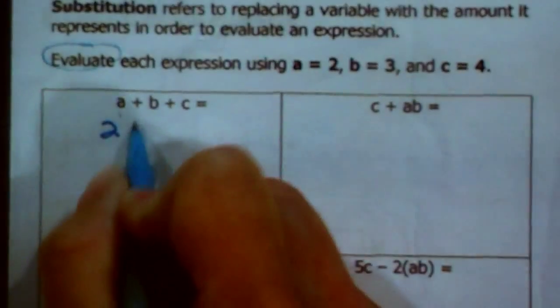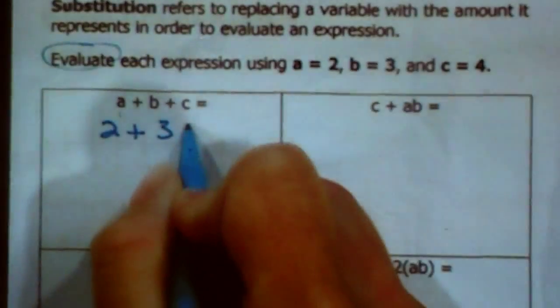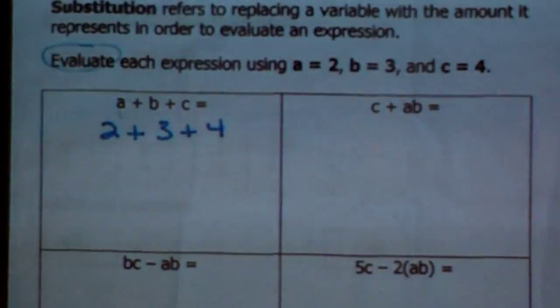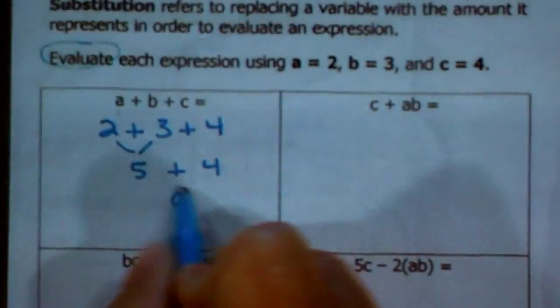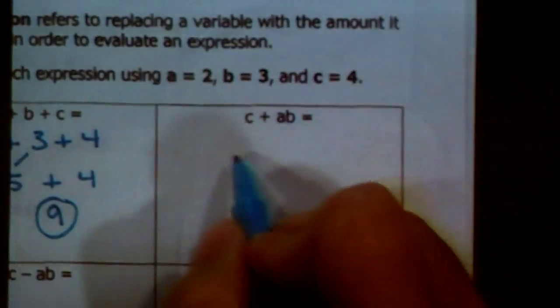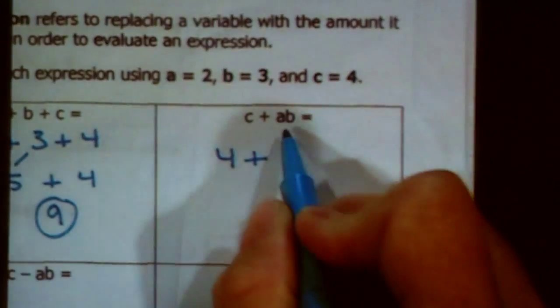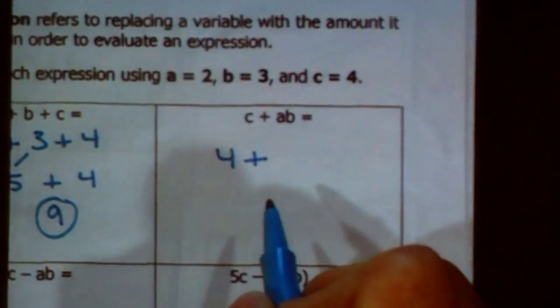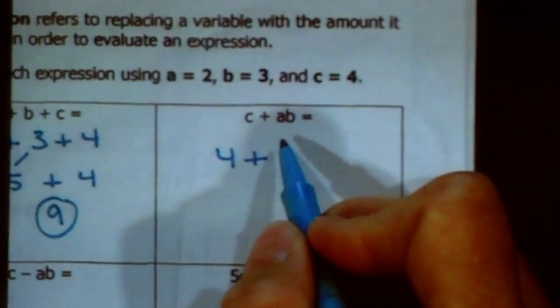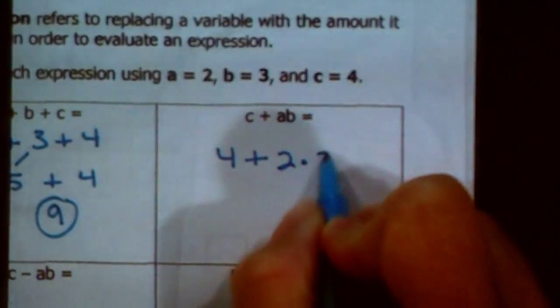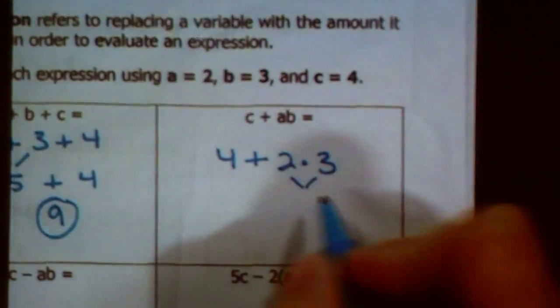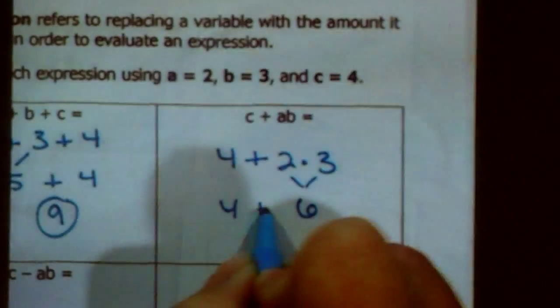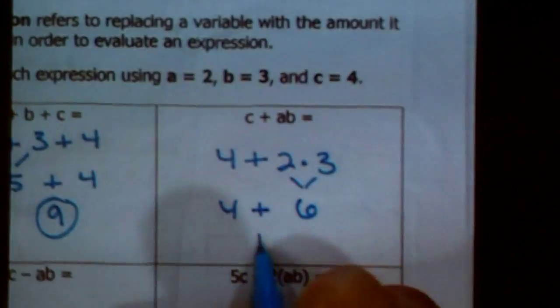Some of you might look at this and say, oh, that's 23 because A is right next to B. That's not what it means. When you have two variables right next to one another, it means multiplication. So AB actually means 2 times 3. Now we have addition and multiplication. Solve your multiplication first. So 3 times 2, 2 times 3, potato, potato, that equals 6, and I still have to bring down this 4, and I'm left with 4 plus 6, which is 10.